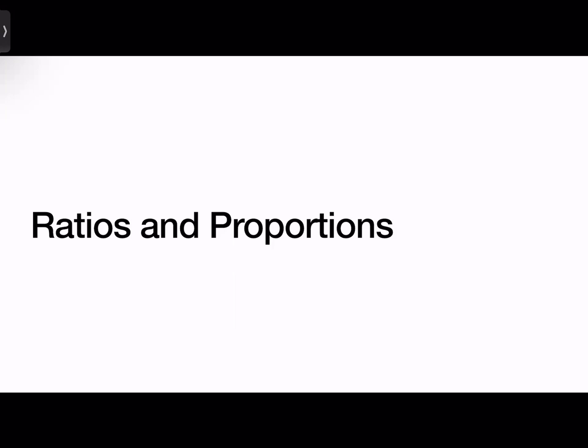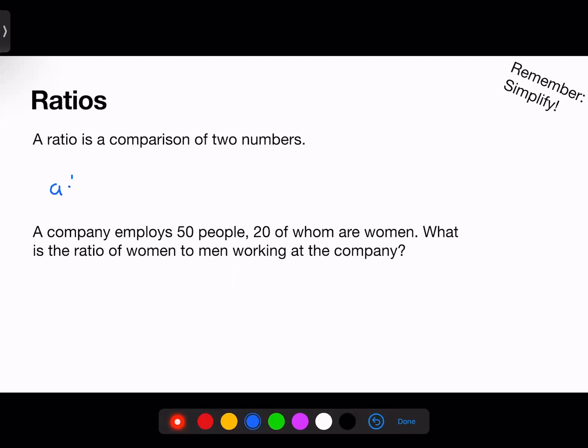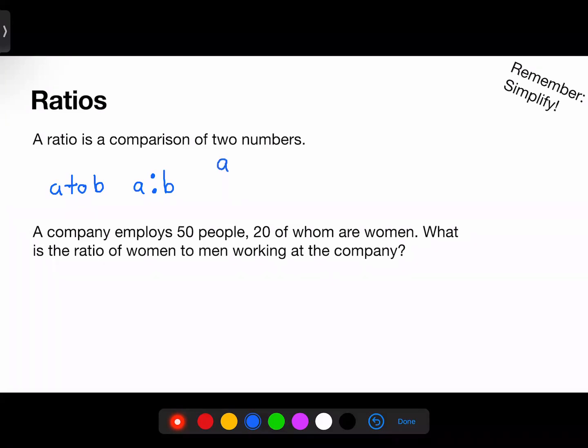First, let's define a ratio. A ratio is a comparison of two numbers. This can be expressed in three different ways: written out as A to B, with a colon as A colon B, or most commonly with a fraction, A over B.